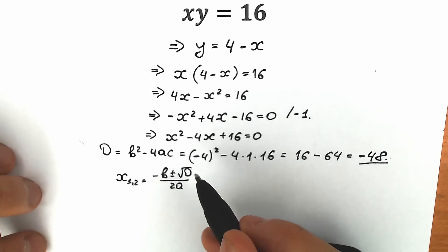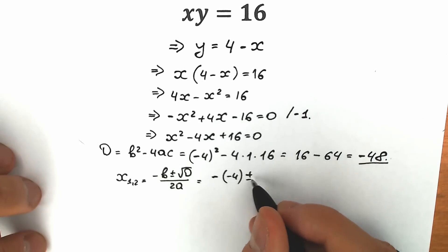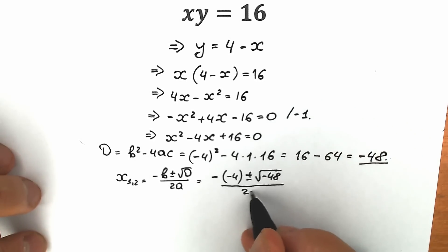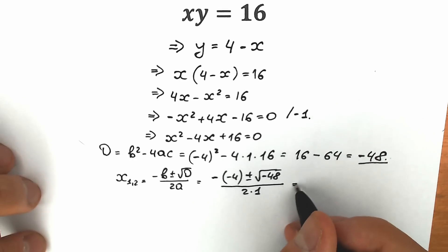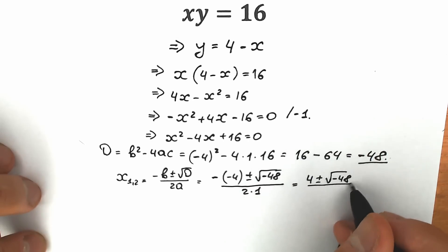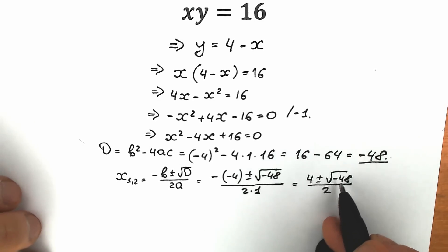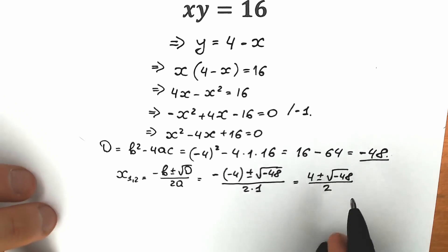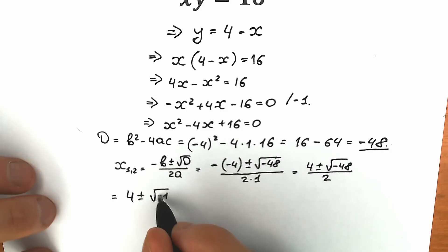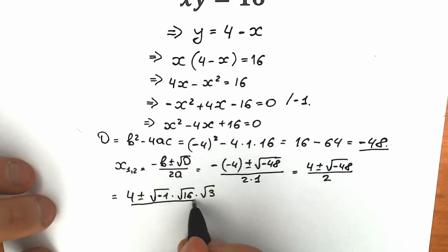So let's apply the quadratic formula: x equals (minus b plus or minus square root of discriminant) all over 2a. Plugging in our values: b equals minus 4, discriminant equals minus 48, and a equals 1, so we have (4 plus or minus square root of minus 48) divided by 2.